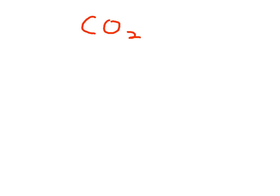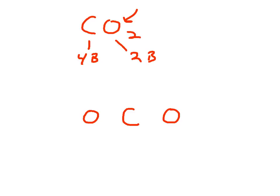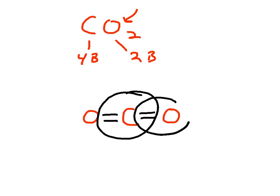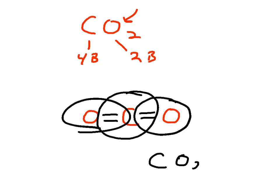Let's do one more — carbon dioxide, CO₂. Carbon needs to make four bonds; each oxygen needs to make two bonds. With only two oxygens available, each oxygen forms a double bond with the carbon. That gives carbon four bonds total and each oxygen two bonds, satisfying all electron requirements. That's what a carbon dioxide or CO₂ molecule looks like.